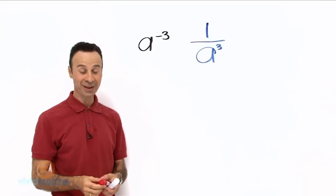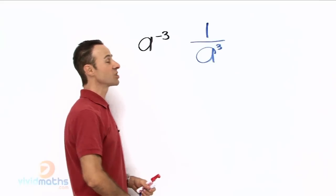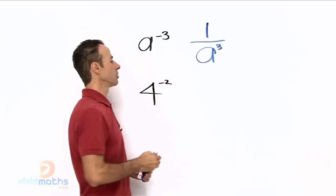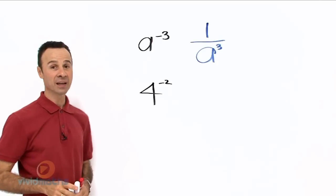Let us do an example 1 with an actual number. So let us say we have, for example, 4 to the power of minus 2, and I want us to solve that negative power.